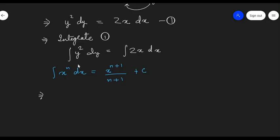Here the value of n on the left hand side is 2, on the right hand side it's 1. So let's calculate. We will get y raised to (2+1) upon (2+1) equal to 2 into x raised to (1+1) upon (1+1) plus c. Let's simplify.